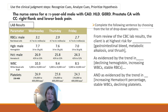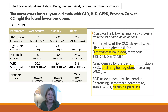And as evidenced by the trend in — is it increasing hematocrit percentage, stable white blood cell counts, or declining platelets? Our answers: from the review of the CBC lab results, the client is at highest risk for gastrointestinal bleed, as evidenced by the trend in declining hemoglobin and the trend in declining platelets.